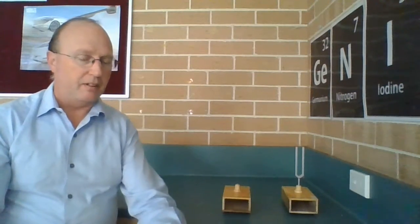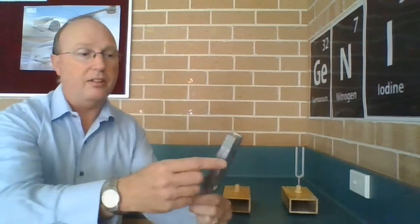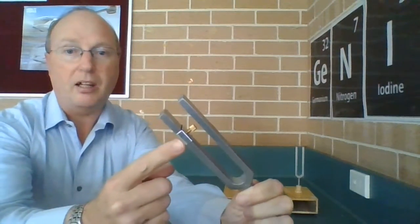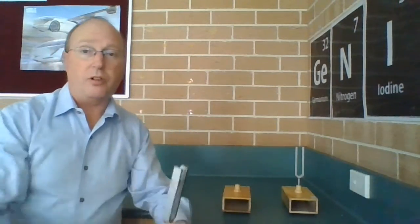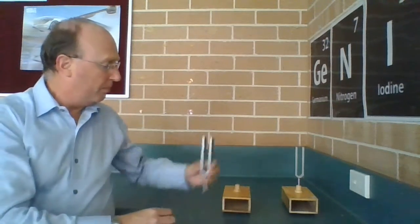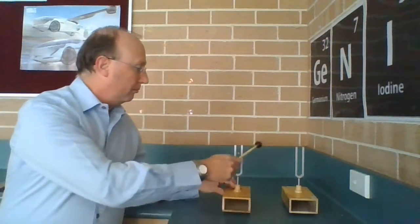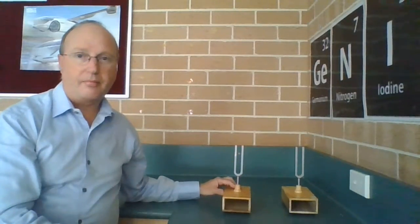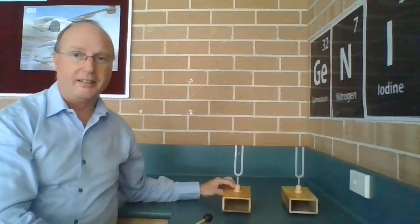Now I have an identical tuning fork here, but you'll notice that on this side there has been placed a small weight. That will make the prongs vibrate a little slower. In other words, less frequently. Not by much, but you'll hear the difference quite clearly. You can hear the note is slightly lower because it's vibrating slightly less.